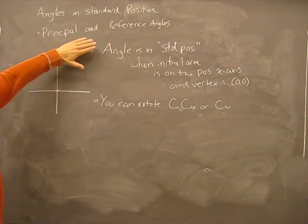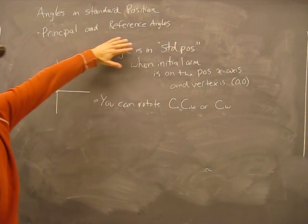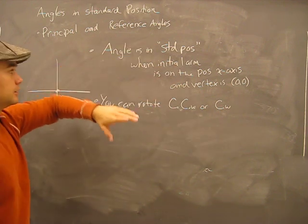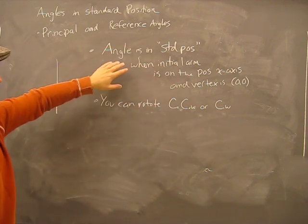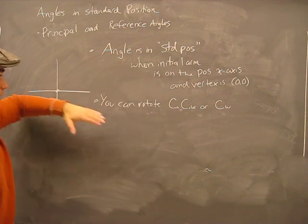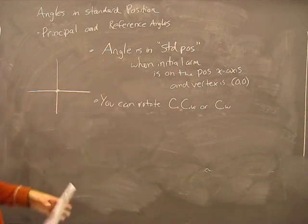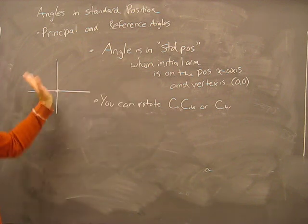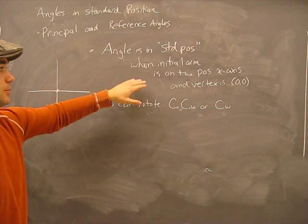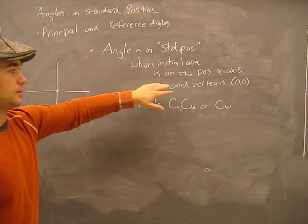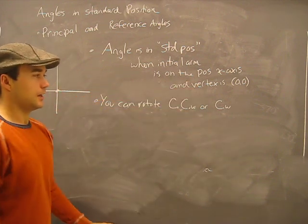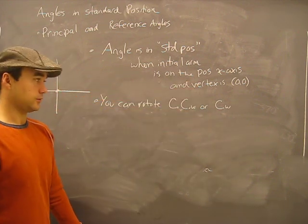Angles in standard position. Let me talk about principal and reference angles, but first a little bit of background. We need to know what an angle is in standard position, because we're going to be drawing these angles in standard position. An angle is in standard position when the initial arm is on the positive x-axis and the vertex is at zero-zero.